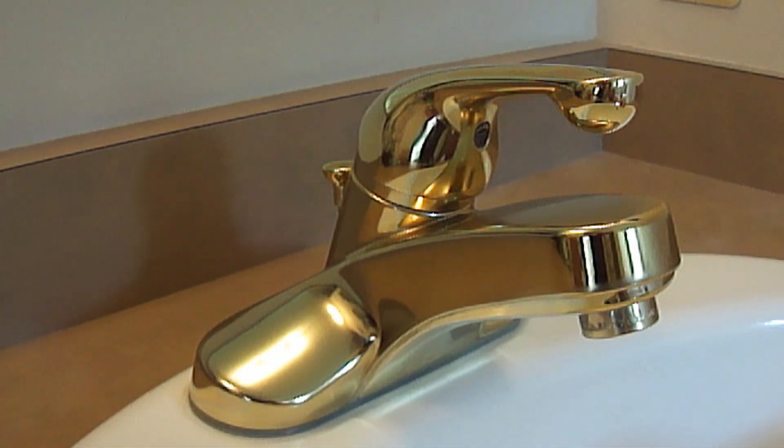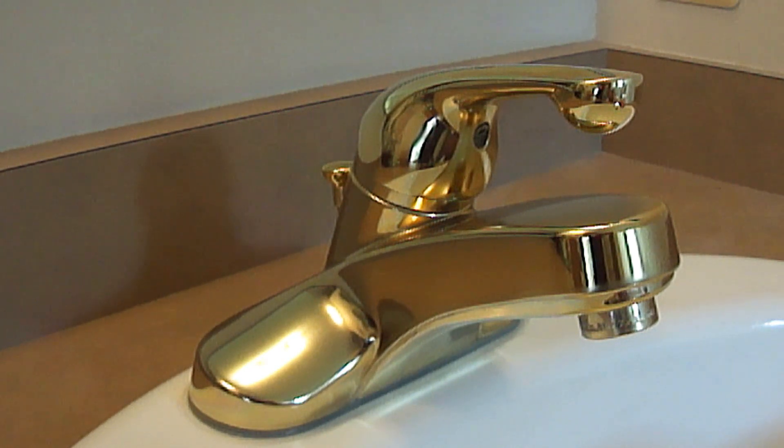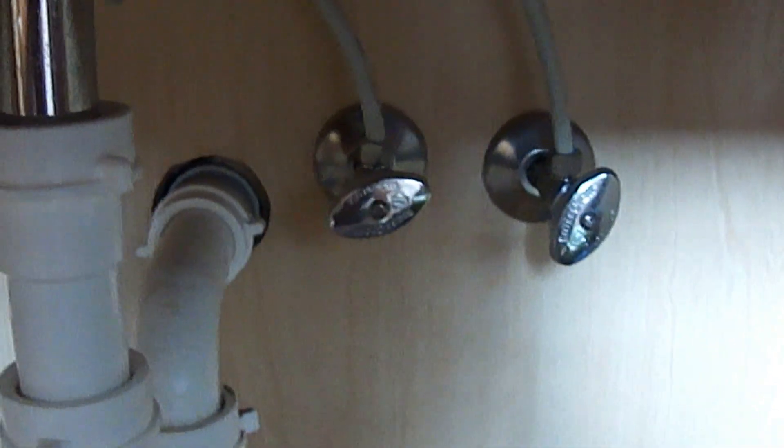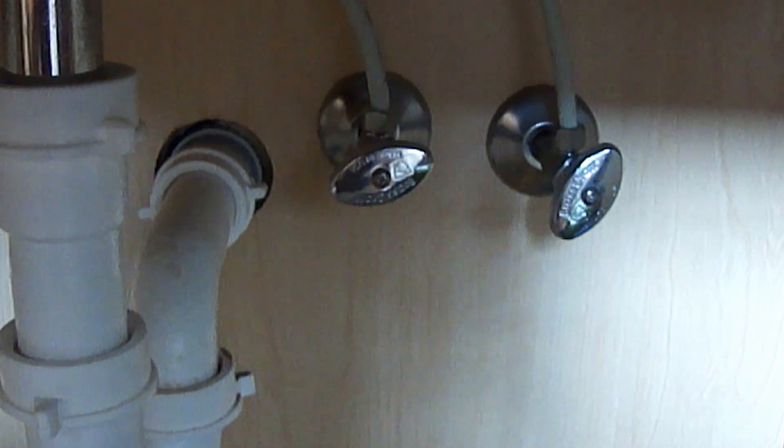The first thing you'll need to do is turn the hot and cold water valves off. These will typically be located below the faucet, which is typically inside your cabinet. Mine happen to be located right here. Just turn them both clockwise to turn them off.